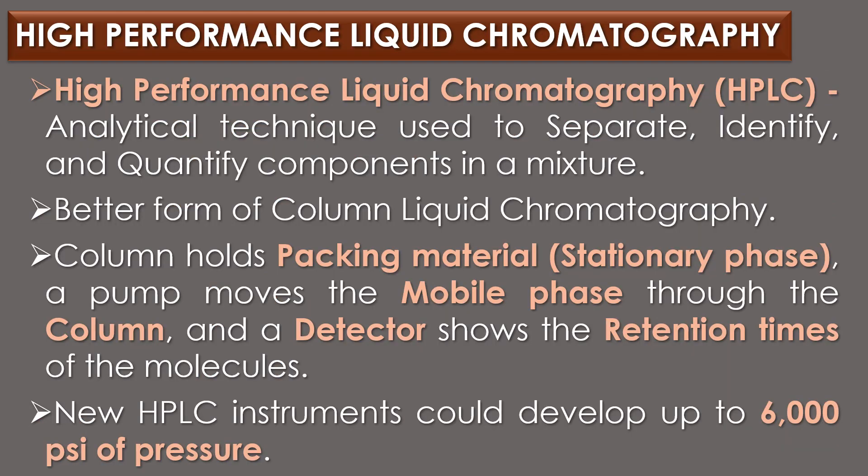High Performance Liquid Chromatography, or HPLC, is an analytical technique used to separate, identify, and quantify the components in a mixture. HPLC is a better form of column liquid chromatography. In HPLC, a column holds packing material or stationary phase, a pump moves the mobile phase through the column, and a detector shows the retention times of the molecules. In the beginning, HPLC pumps only had a pressure capability of 500 psi. Nowadays, new HPLC instruments can develop up to 6000 psi of pressure and incorporate improved injectors, detectors, and columns.